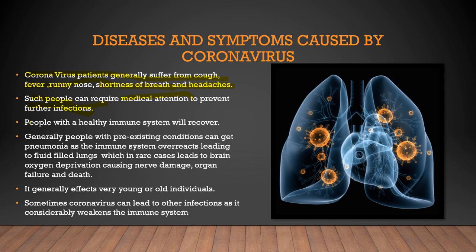People with pre-existing conditions can get pneumonia, as the immune system overreacts — it releases fluid and mucus into the lungs trying to control this. This leads to pneumonia, which in rare cases causes brain oxygen deprivation, meaning the lungs are full of fluid and can't send oxygen to the brain, which can cause nerve damage, organ failure, and death in the rarest of cases. It generally affects very young or old individuals and causes more complications in them. Sometimes coronavirus can lead to other infections as it considerably weakens the immune system.